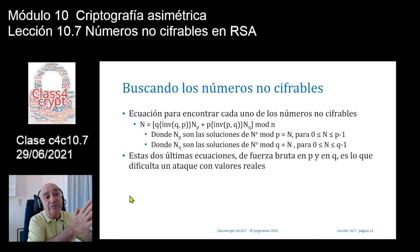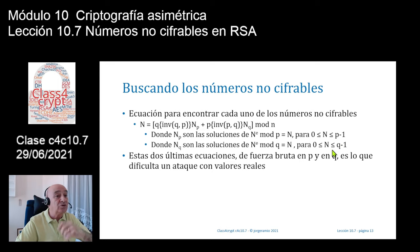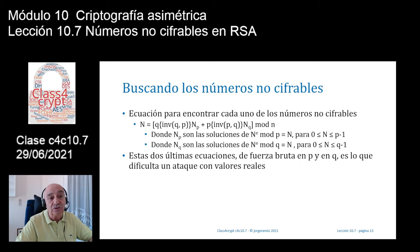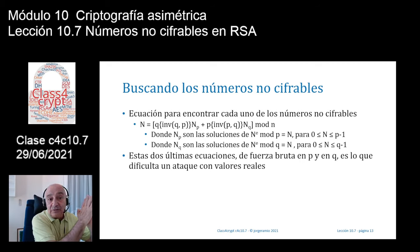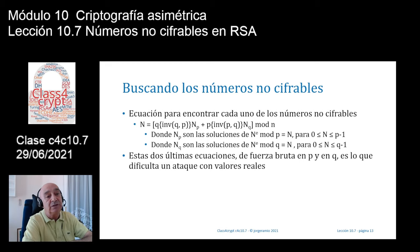Estas dos ecuaciones son de fuerza bruta y son las que traen problemas para encontrar los valores no cifrables en claves reales. En el caso anterior con P=17 o 19 y Q=31 eran números muy pequeños, pero si estamos trabajando con claves reales donde P y Q son números de 1024 bits, entonces debo hacer un ataque de 2 elevado a 1024, lo cual es totalmente imposible con el cómputo actual. Incluso para claves de 512 bits ya era imposible.